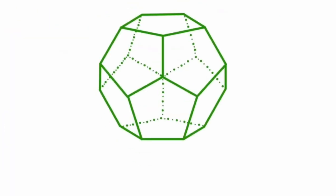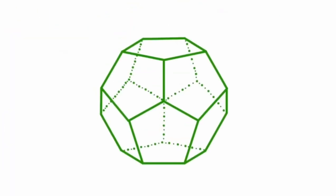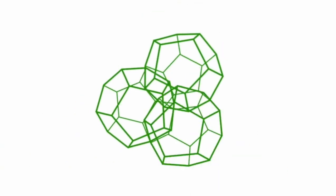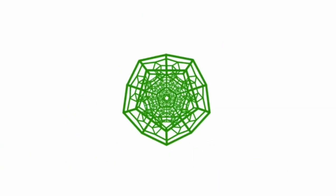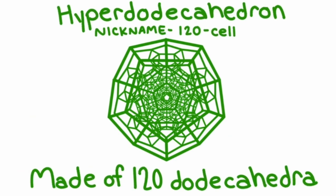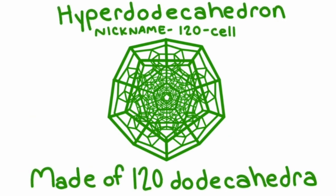Our last perfect three-dimensional shape we will use is the dodecahedron. If we put three dodecahedra around a shared edge, we can bend it into a fourth-dimensional corner. This corner is very small, though, so we will need 120 dodecahedra to make the hyper-dodecahedron.